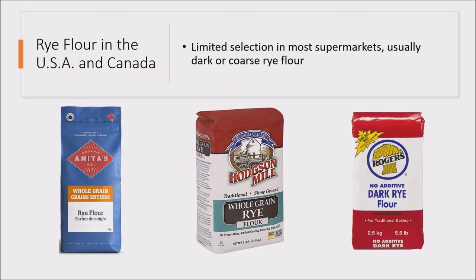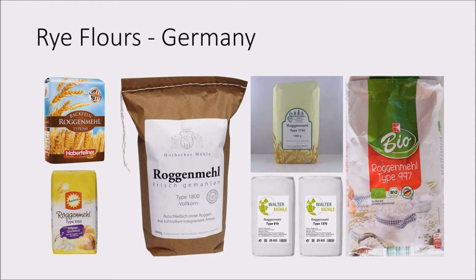Looking a little more at rye flour in the US and Canada — as shown in the previous slide, there's a huge variety of potential rye flours. However, you don't really see these in most grocery stores or supermarkets in the US and Canada; typically there's a very limited selection. I've almost exclusively seen dark coarse grain rye flours, like the brands shown here — Anita's and Rogers are very popular brands in Canada, whereas Hodgson Mill is more popular in the United States. As opposed to Canada and the United States, certain countries have a wide variety of rye flours. For example, in Germany there are eight common rye flours, ranging from white or light rye flours to very whole grain rye flours.